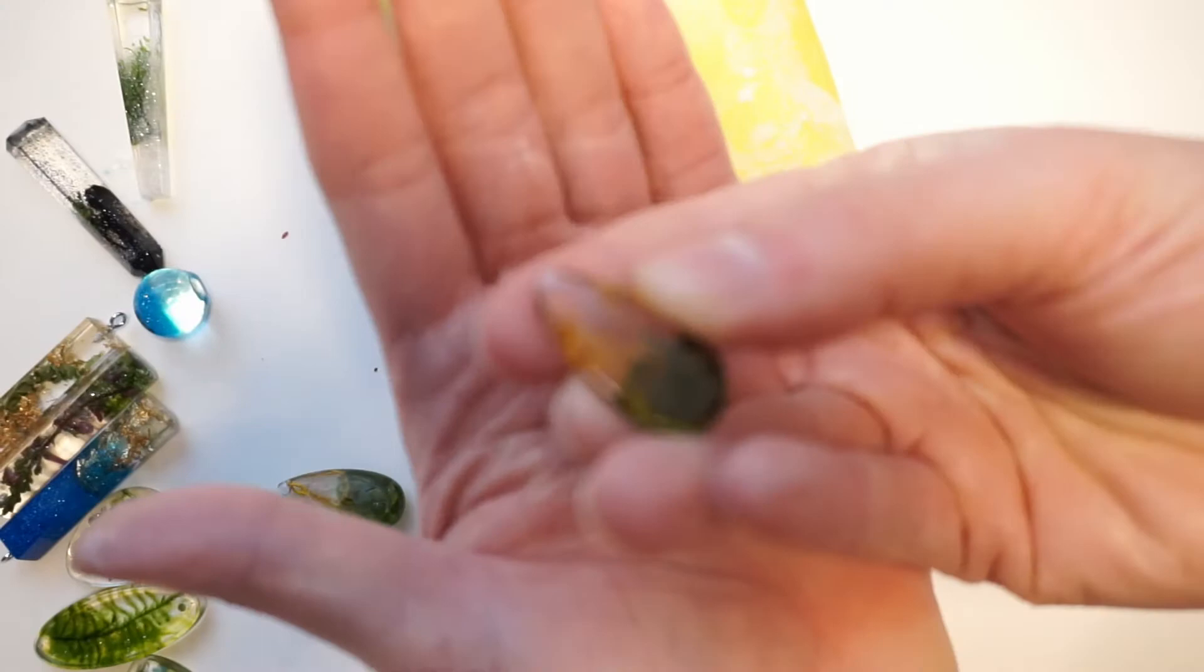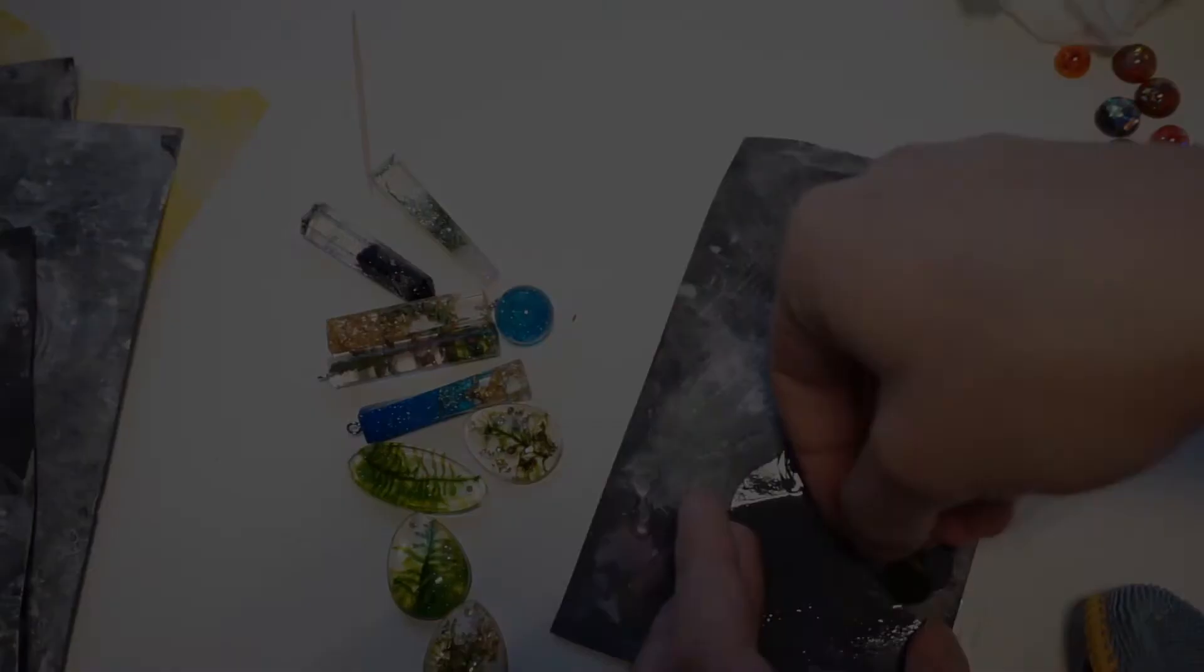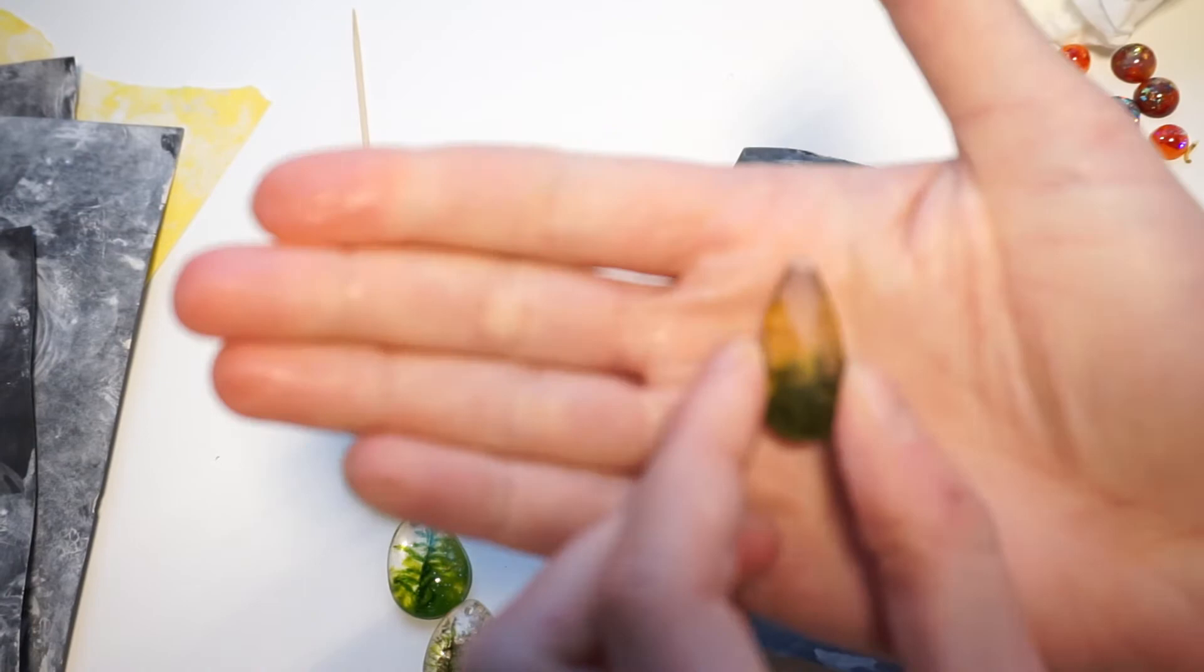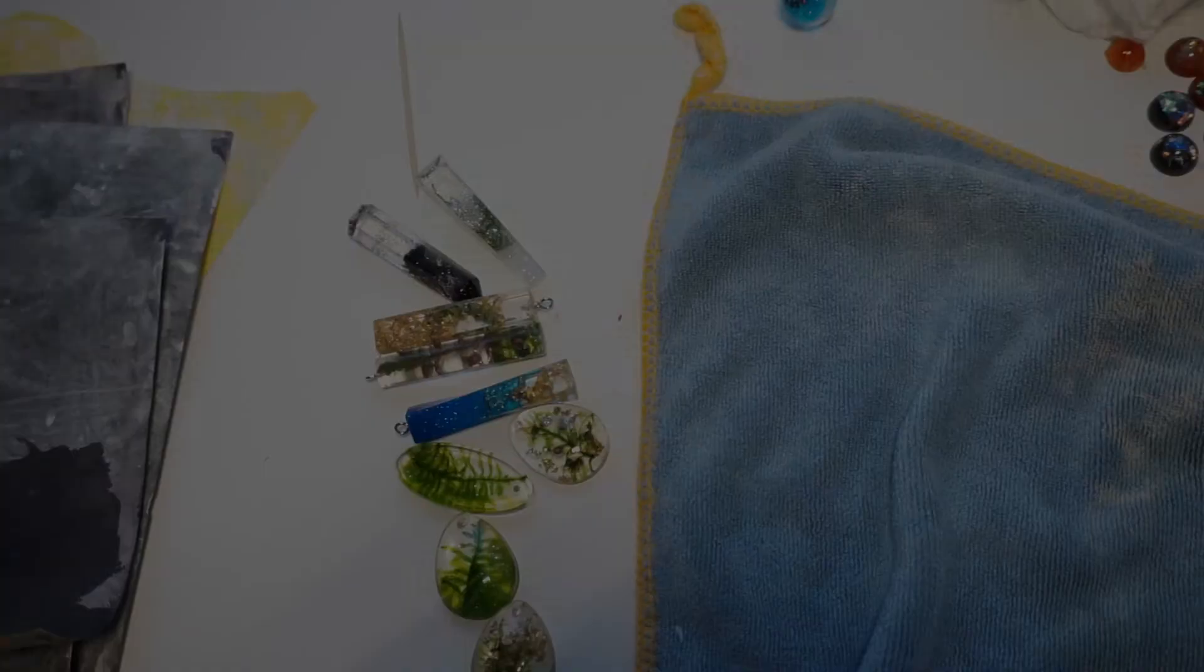And now on to the earrings. For these I need to sand them down. I use about six grades of sanding paper but I'm not gonna bore you with that. And the final is this scratch remover to polish it.